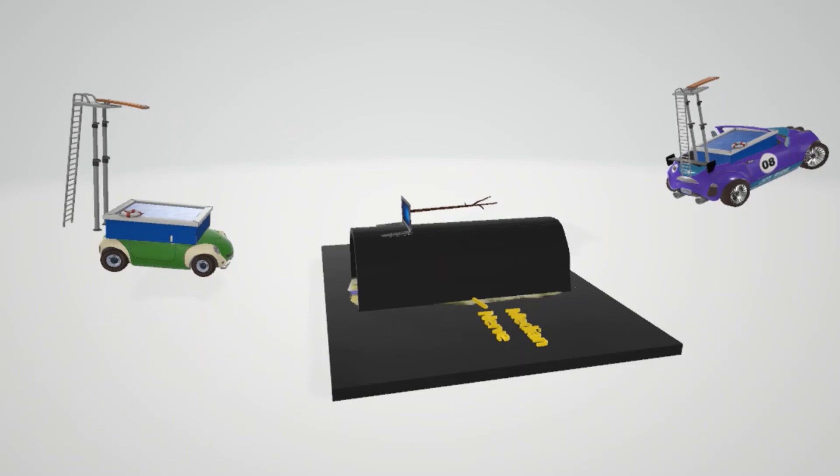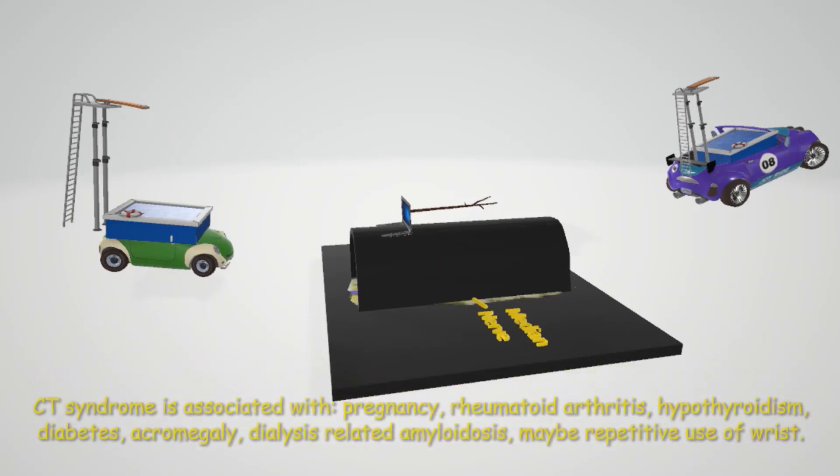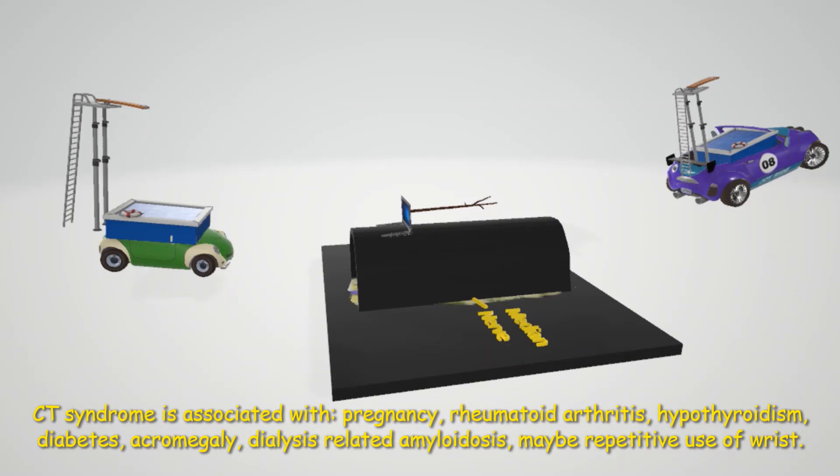We'll end off this scene with a quick mention of what carpal tunnel syndrome is associated with. It's associated with pregnancy due to edema, rheumatoid arthritis, hypothyroidism, diabetes, acromegaly, dialysis-related amyloidosis, and may be associated with repetitive use of the wrist.